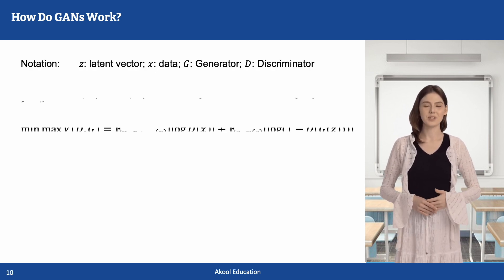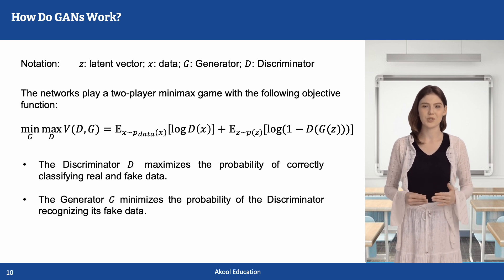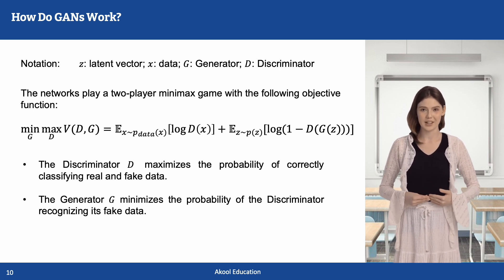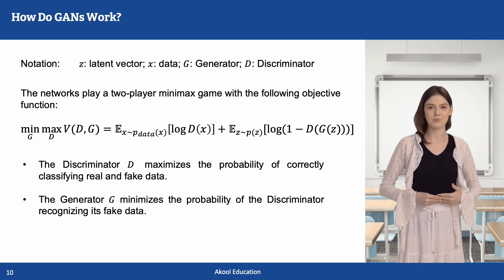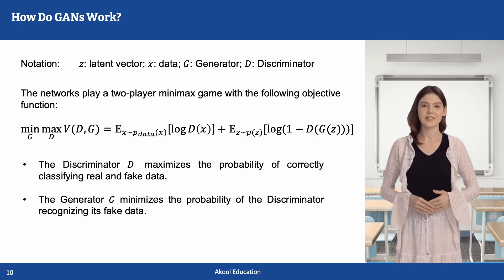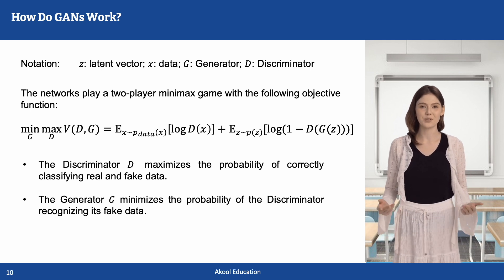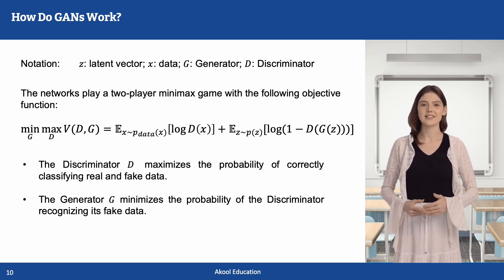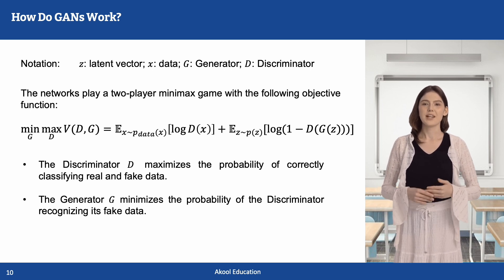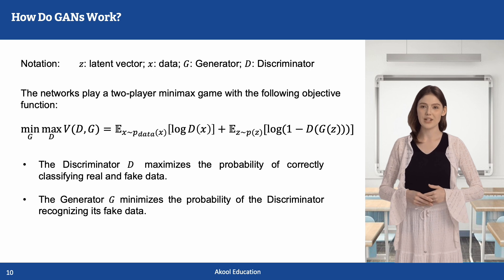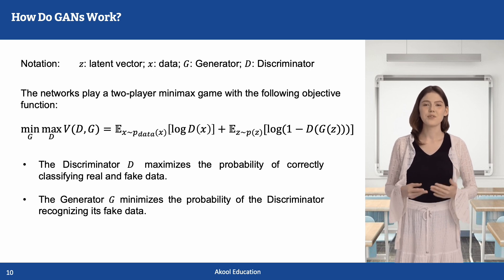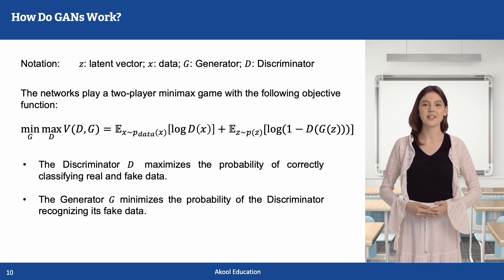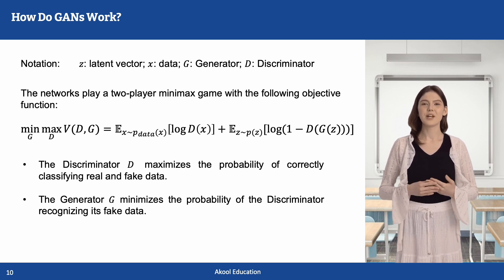We begin by introducing some notation. Let Z represent a latent vector, X denote real data, G be the generator, and D be the discriminator. The networks play a two-player minimax game with the following objective function, in which both G and D are trainable. D(X) is the probability that the discriminator assigns real data to be real. D(G(Z)) is the probability that the discriminator assigns generated data to be real. The discriminator maximizes log(D(X)) to correctly classify real samples as real, while the generator minimizes log(1 − D(G(Z))), trying to fool the discriminator into classifying fake samples as real.